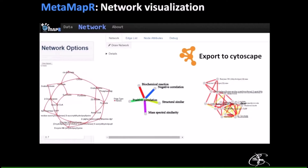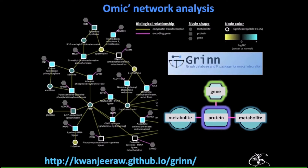MetaMapper also allows interactive visualization or export to Cytoscape to build networks. To add genes and proteins to your metabolites, I'd like to highlight GRIN — a tool developed by Kwanjeera Wanichthanarak at the West Coast Metabolomics Center. GRIN extends the idea of metabolic connections: metabolites are linked together through the protein responsible for their production, and the gene is mapped to the protein. This allows incorporating metabolites, genes, and proteins on a pathway-independent basis, and you can also perform network-based enrichment using graph theory to identify modules that are statistically more important.